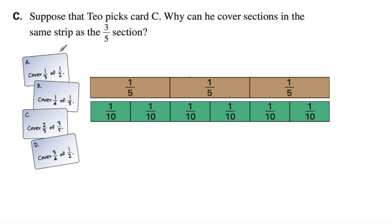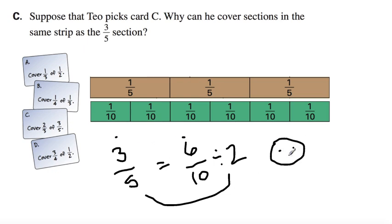Suppose that Tio picks card C. Why can he cover sections in the same strip as the three-fifths section? We'll go through that question specifically in class. But we want to say here's two-thirds of three-fifths. So here's three-fifths. One, two, three-fifths. The equivalent fraction strip is one, two, three, four, five, six-tenths. So three-fifths equals six-tenths. Divide this by two and what do you got? You got three-fifths. So that's why can he cover sections in the same strip as the three-fifths section, because these are equivalent. These are good friends right here.